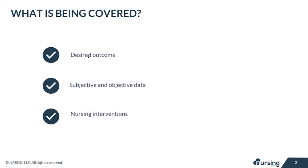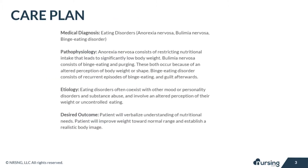In this care plan we will cover eating disorders including anorexia nervosa, bulimia nervosa, and binge eating disorder. We will cover the desired outcome, the subjective and objective data, along with the nursing interventions and rationales for each.